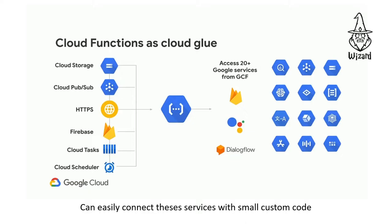Here is the example of Google Cloud Functions. If you use Google Cloud Functions, you can connect with GCP services through language translation and machine learning. You can access the Cloud Functions through HTTP, Cloud Pub/Sub, and you can set a scheduler to access GCP.